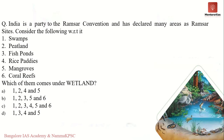Here is a practice question: 'India is a party to the Ramsar Convention and has declared many areas as Ramsar sites. Consider the following — swamps, peatlands, fish ponds, rice paddies, mangroves, coral reefs.' The thing is that all of them can be considered to be a wetland, so the answer is option C.